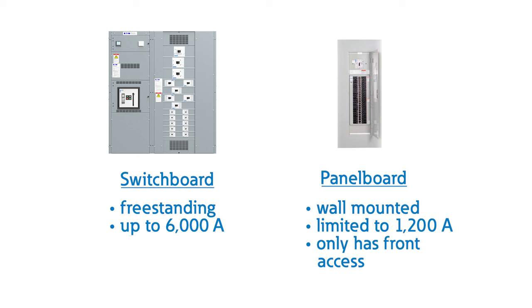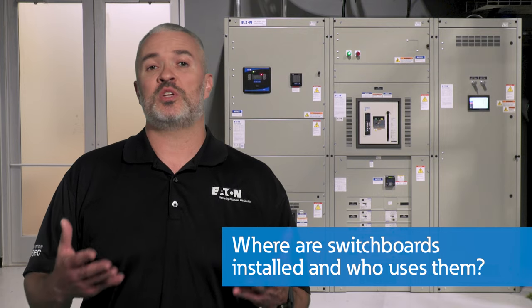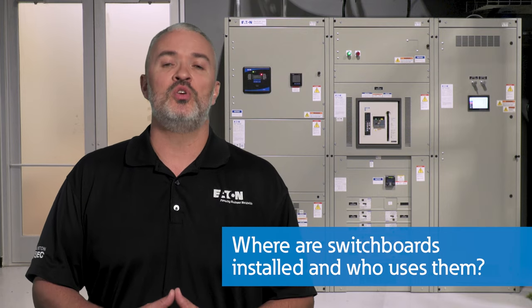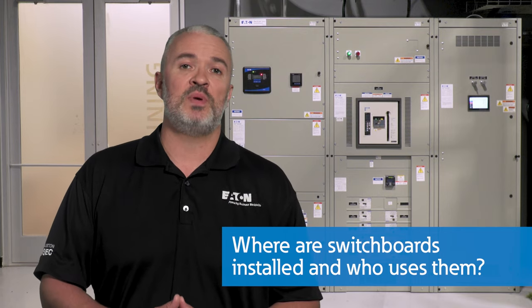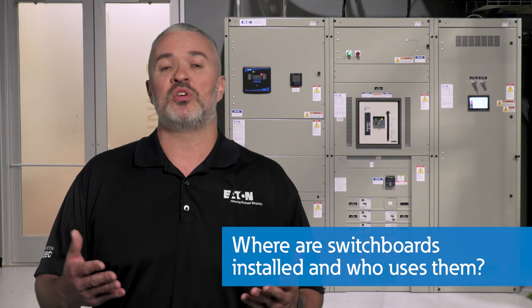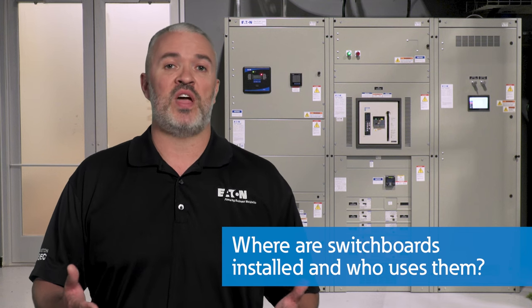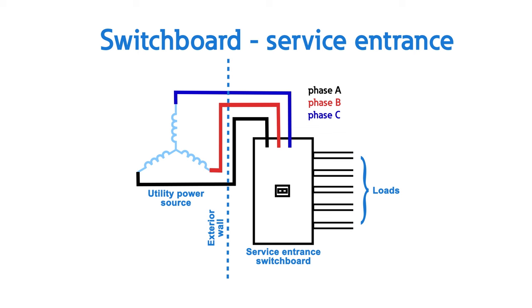Similar to panel boards, switchboards can be front-connected, requiring only front access. However, switchboards can allow rear access if desired. Switchboards are key pieces of low-voltage distribution equipment. They can either be fed from a power circuit breaker and upstream switchgear assembly, or fed directly from the electric utility service transformer in smaller facilities, which is referred to as service entrance.